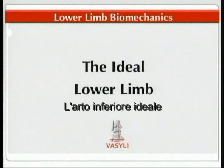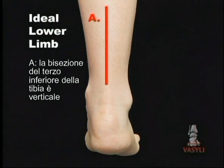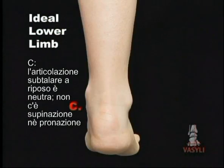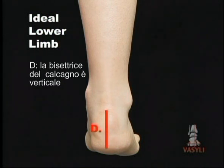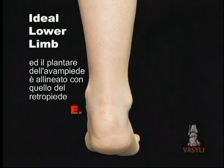The ideal lower limb exhibits the following characteristics. A: bisection of the lower one-third of the tibia is vertical. B: the knee, ankle and subtalar joint lie in the transverse plane parallel to the supporting surface. C: the subtalar joint rests at neutral, i.e. no supination or pronation. D: the bisection of the calcaneus is vertical. E: the mid-tarsal joint is locked and maximally pronated, and the forefoot plantar plane aligns with the rear-foot plantar plane.